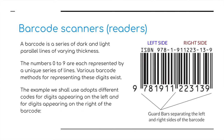We move on to another type of scanner — one all of us have encountered: barcodes. This is a universal standard, and it generally appears on any product sold in supermarkets. A barcode is a series of dark and light parallel lines of varying thicknesses. The numbers 0 to 9 are each represented by a unique series of lines. Various barcode methods exist; the example used for IGCSE Computer Science adopts different codes for digits appearing on the left and right of the barcode, separated by guard bars — a left guard bar, a middle guard bar, and a right guard bar.